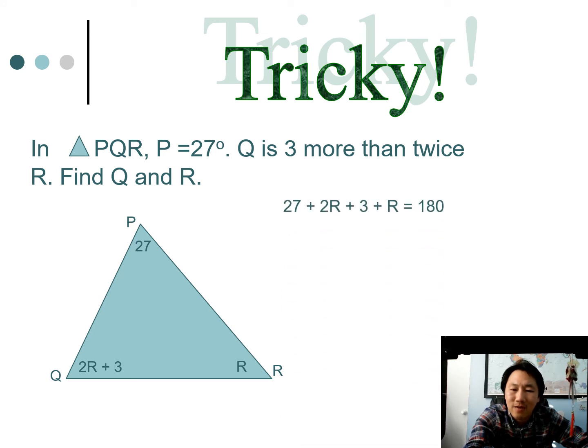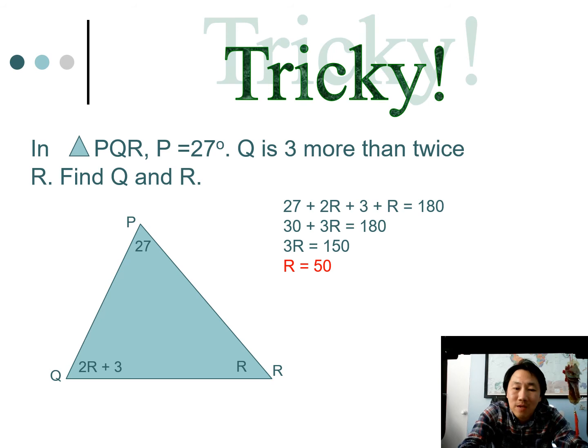Combine like terms, subtraction property, division property. We get R equals 50. And then it says to find Q as well, so I'm just going to plug R into there to get Q to be 103.